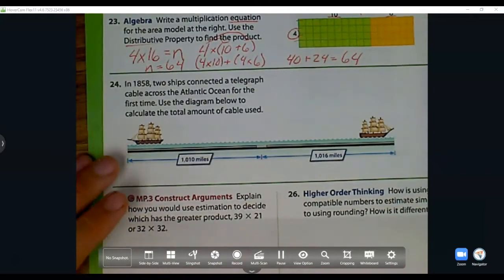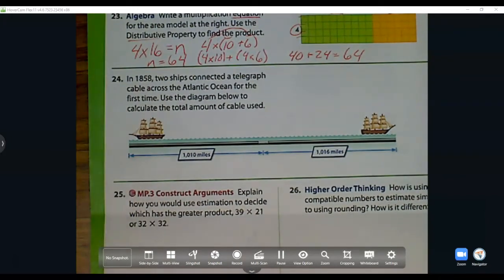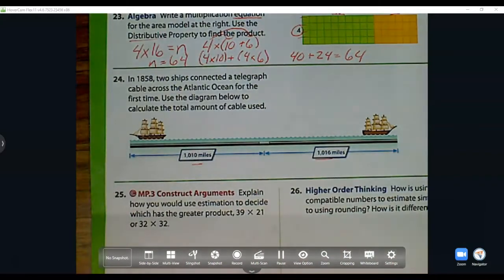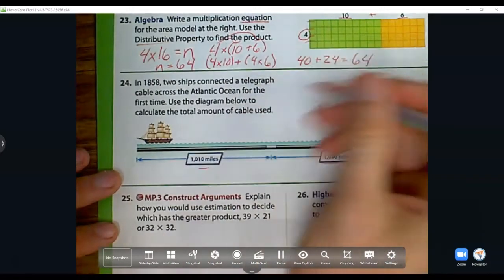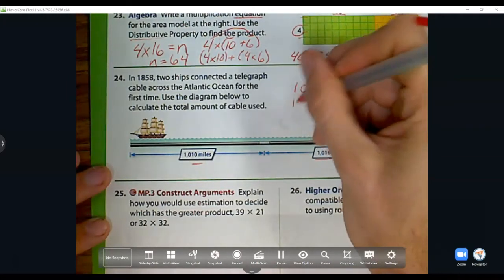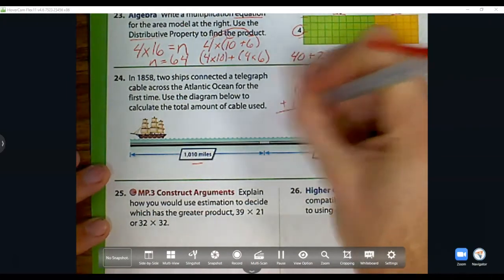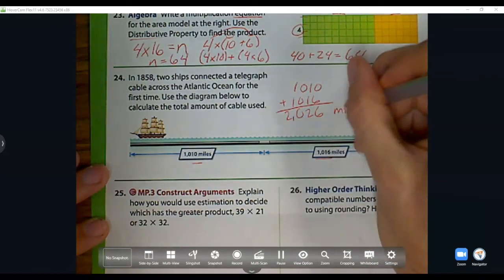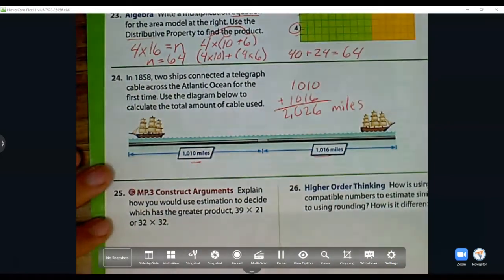Question number 24: In 1858, two ships connected telegraph cable across the Atlantic Ocean for the first time. Use the diagram below to calculate the total amount of cable. The total amount means we add them together. We're adding those two telegraph lines together. How many miles was it? We add them up and it's 2,026 miles. That's a very long cable they connected.